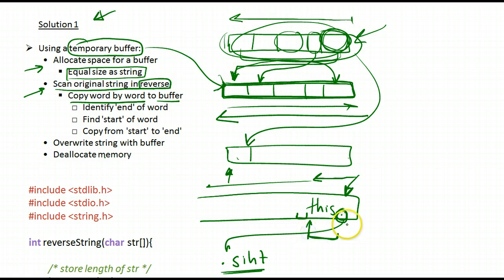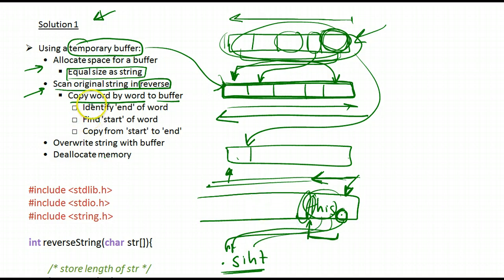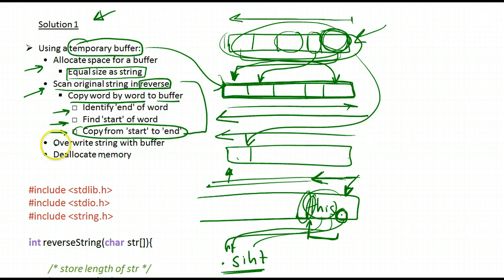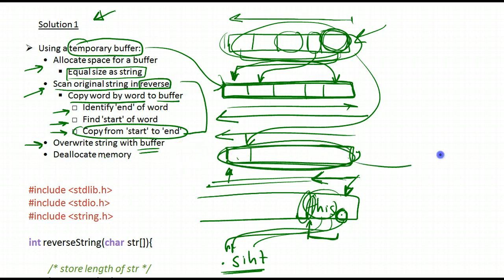We have to first scan the complete word until we identify its beginning. When we know where it starts and where it ends, we then perform the copy — we can't copy as we're sweeping. We sweep, stop, learn where the beginning of the word is, then copy it. After scanning the entire string in reverse, we overwrite the original string with the buffer, which now contains the reversed string. Then we copy the buffer onto the original string and deallocate the memory.